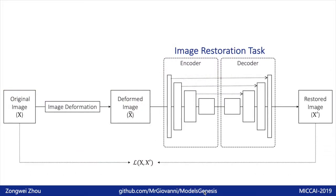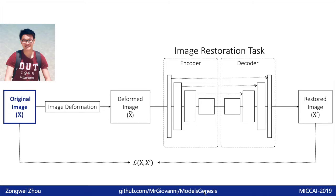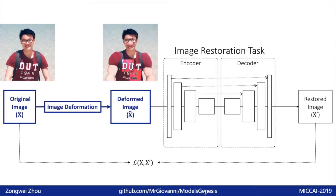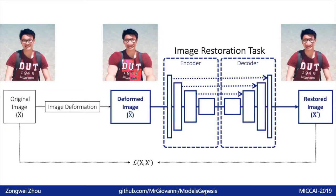Here shows the diagram of our self-supervised learning framework. We design it as a simple image restoration task. Given the image, we first deform it and then feed it into a model, letting the model learn to restore the original image. We adopt the VNet architecture, where the ground truth is the original image and the input is the deformed image.